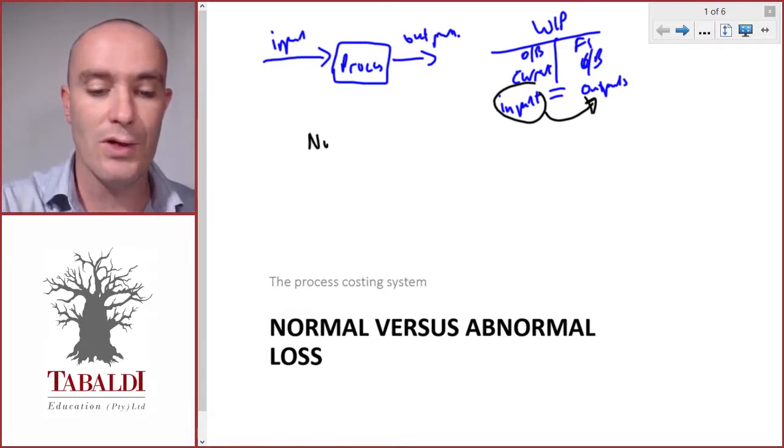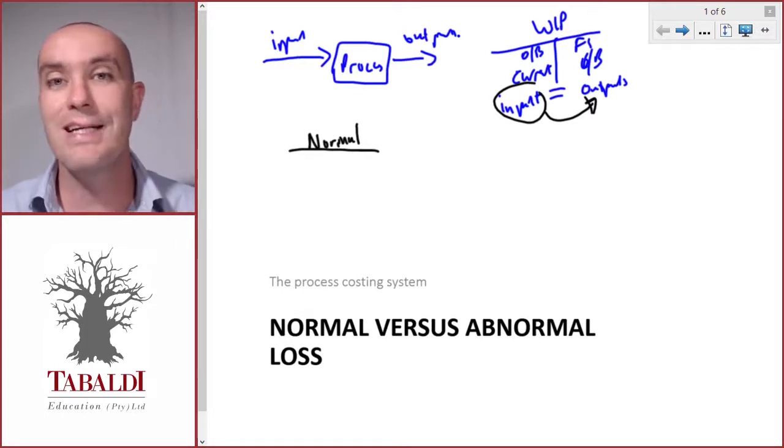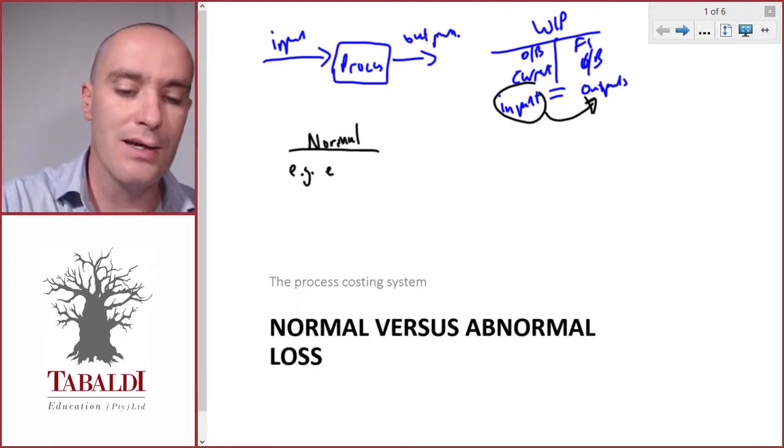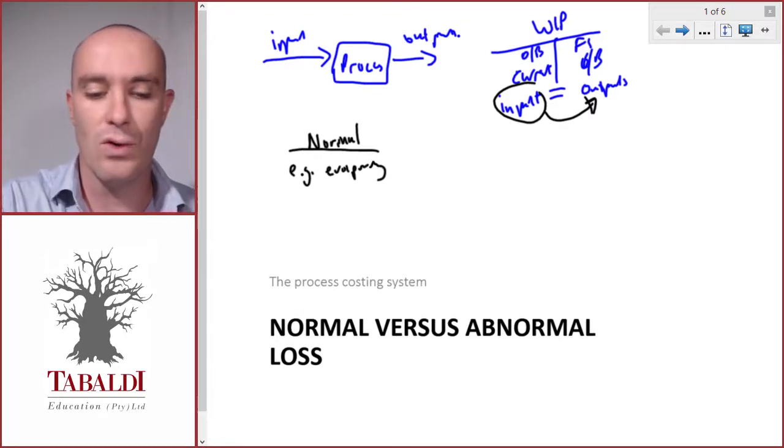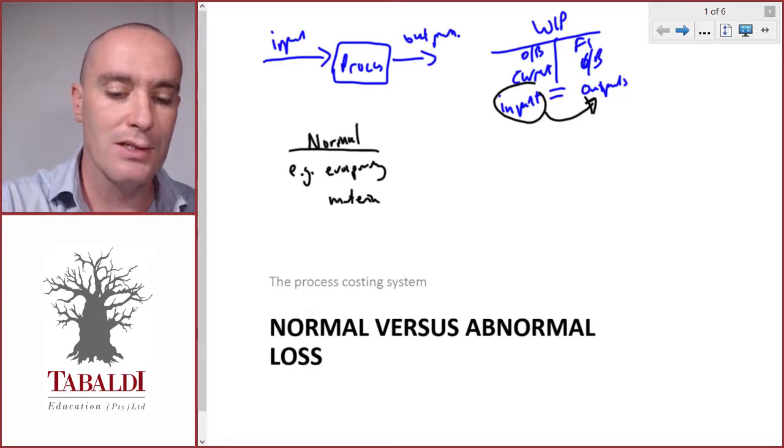The first one is normal losses. Normal losses are inherent in the manufacturing process. The process is already designed to be as efficient as possible and normal losses still take place. They are unavoidable.